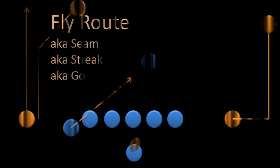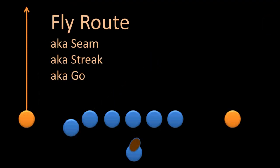The simplest route is the one with the most names. The fly route, or the seam, or the streak, or the go, is when the receiver simply runs in a straight line. You can see how this would allow the receiver to get behind the defenders quickly, particularly if he's fast.